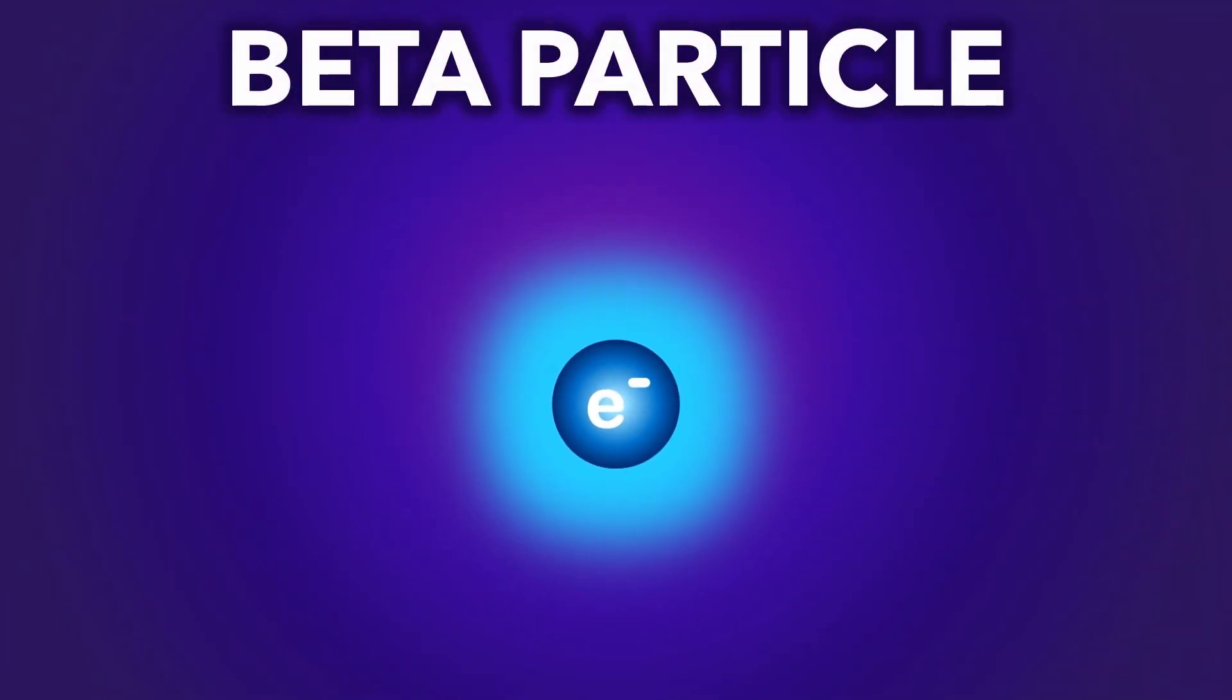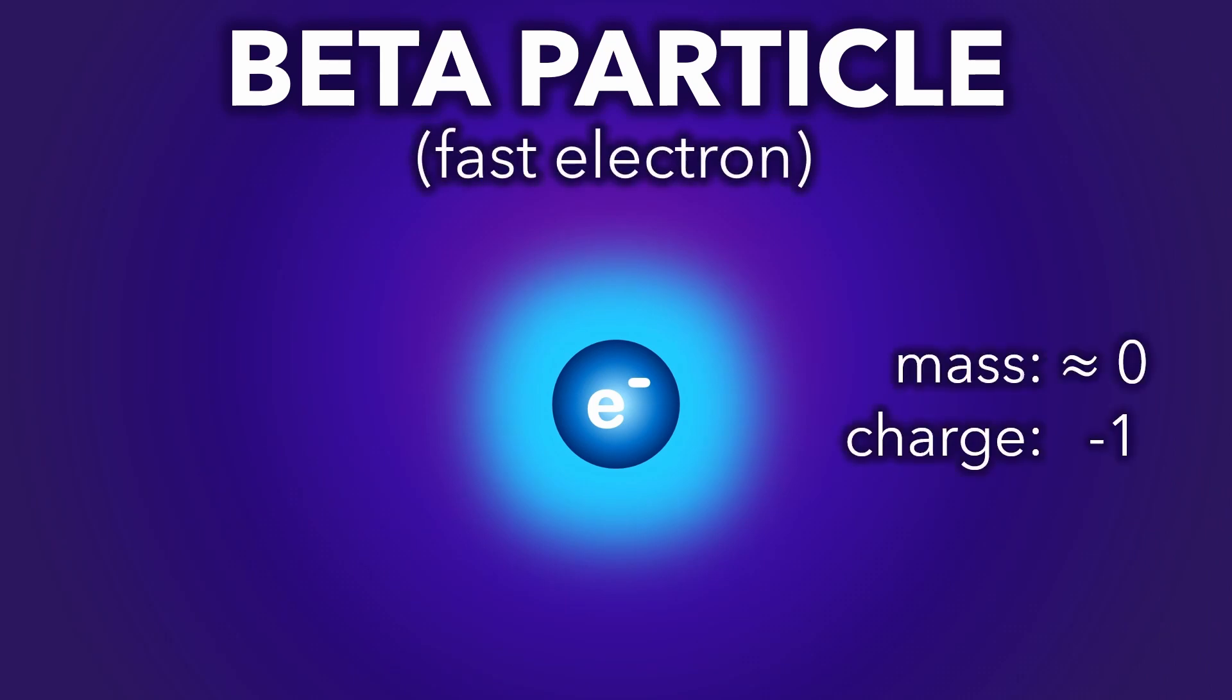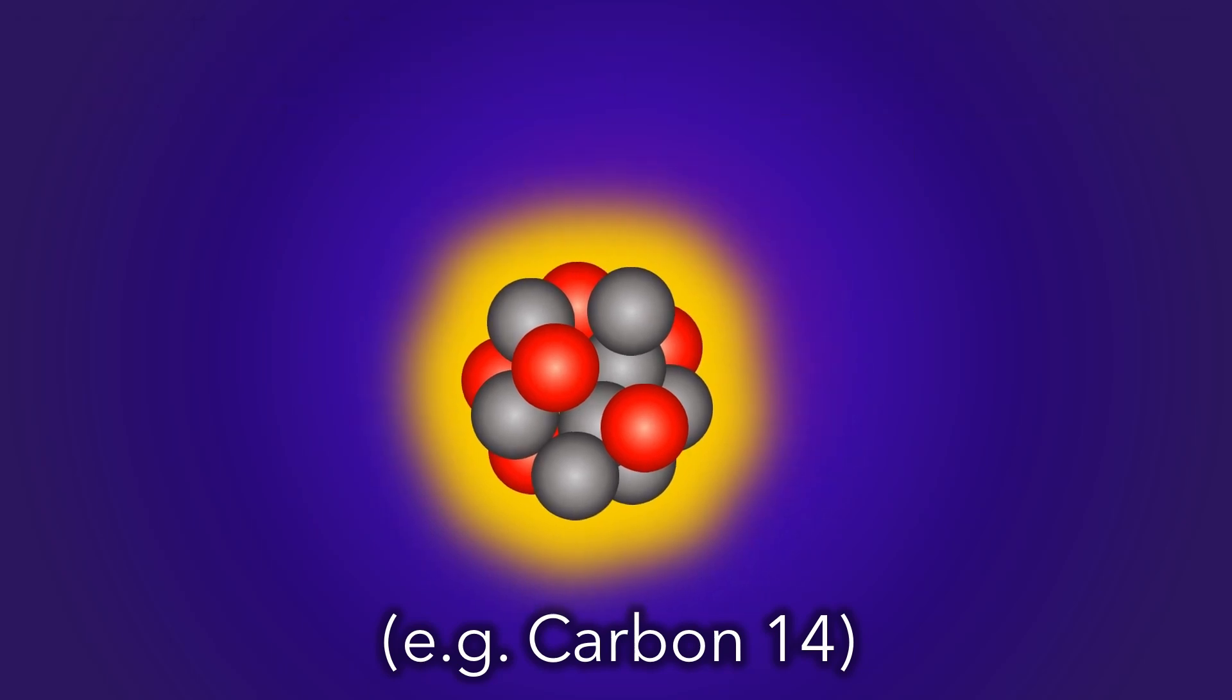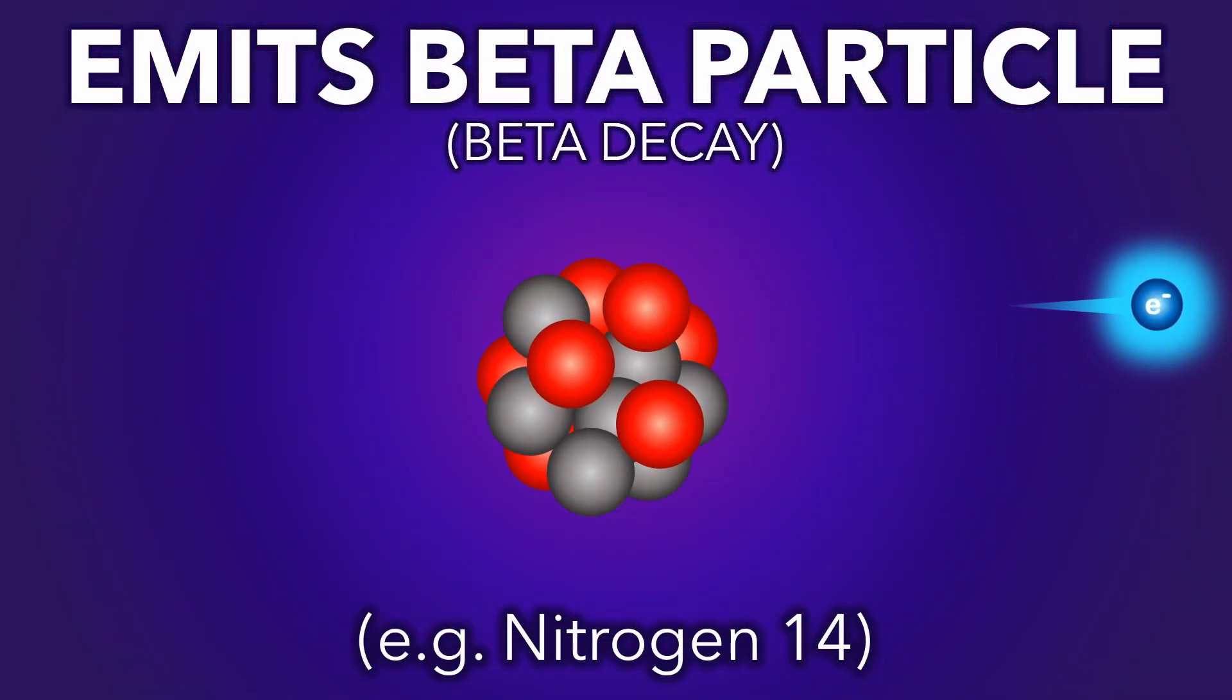Next is a beta particle, basically a fast electron with a very small mass and a charge of minus 1. When a nucleus has too many neutrons, it turns one into a proton by emitting a beta particle.